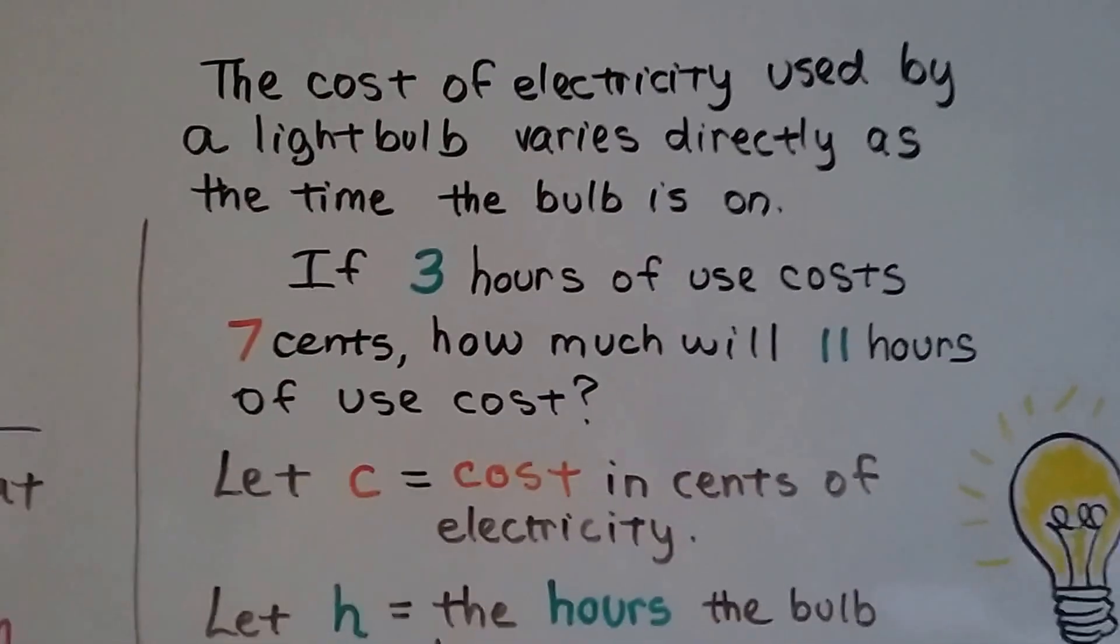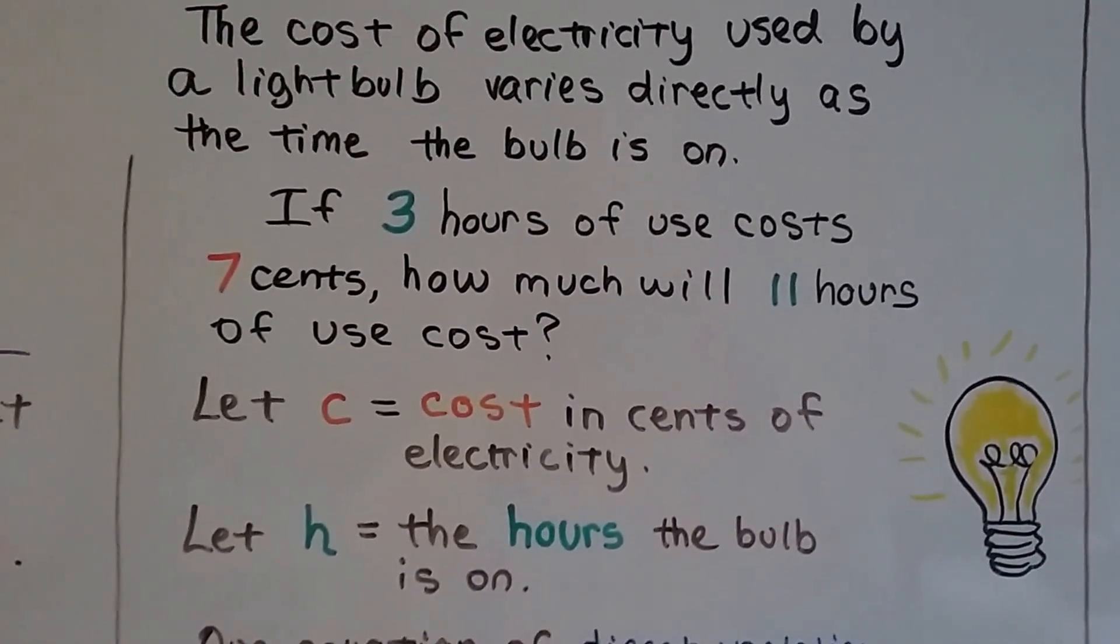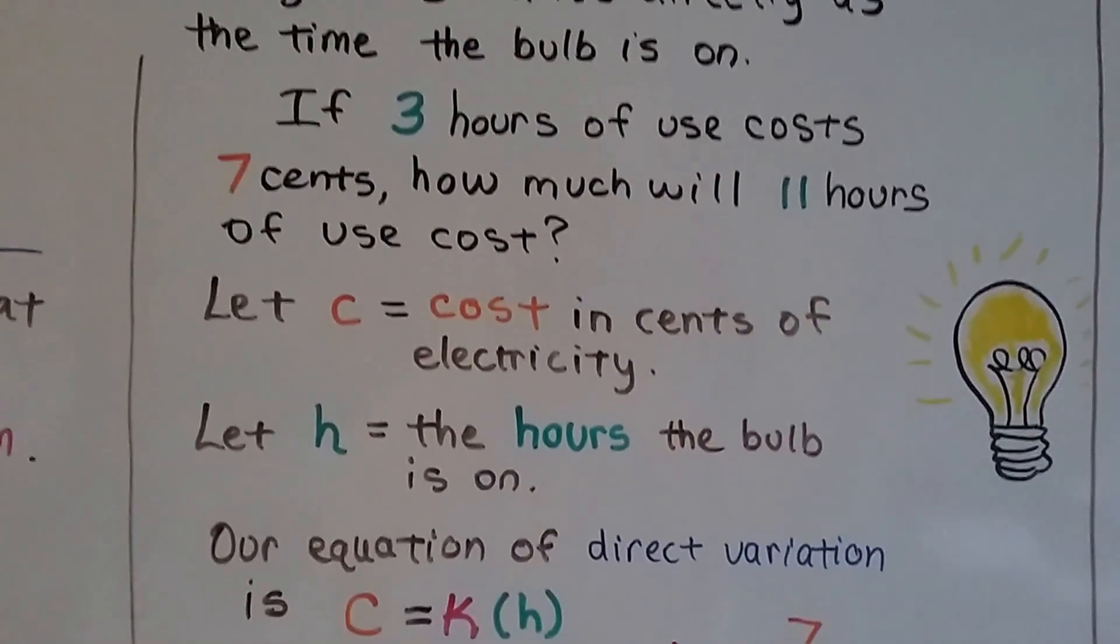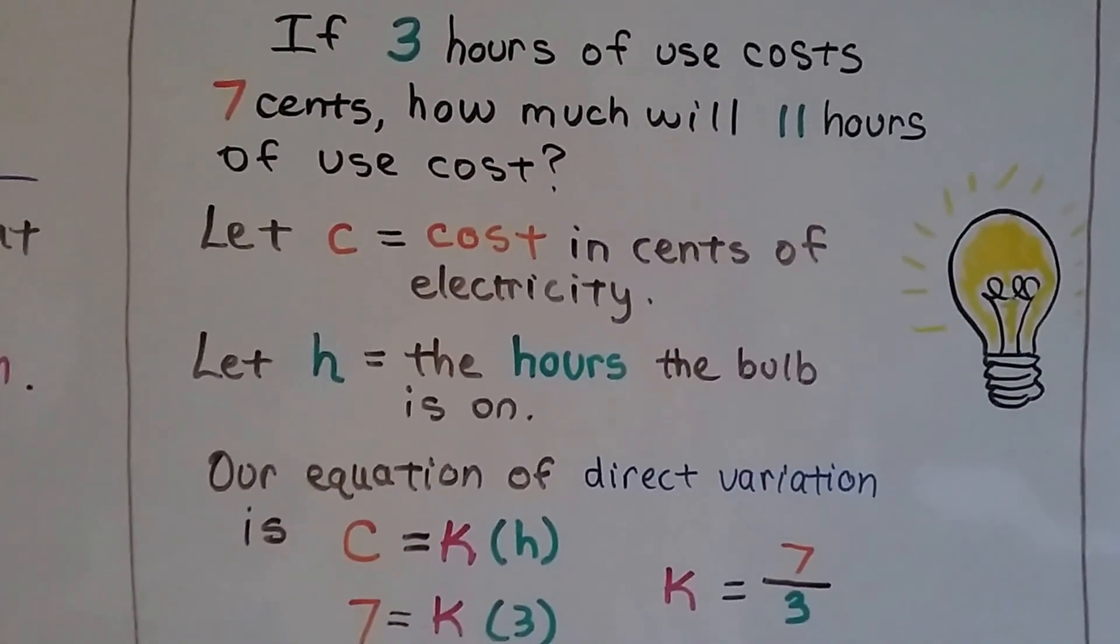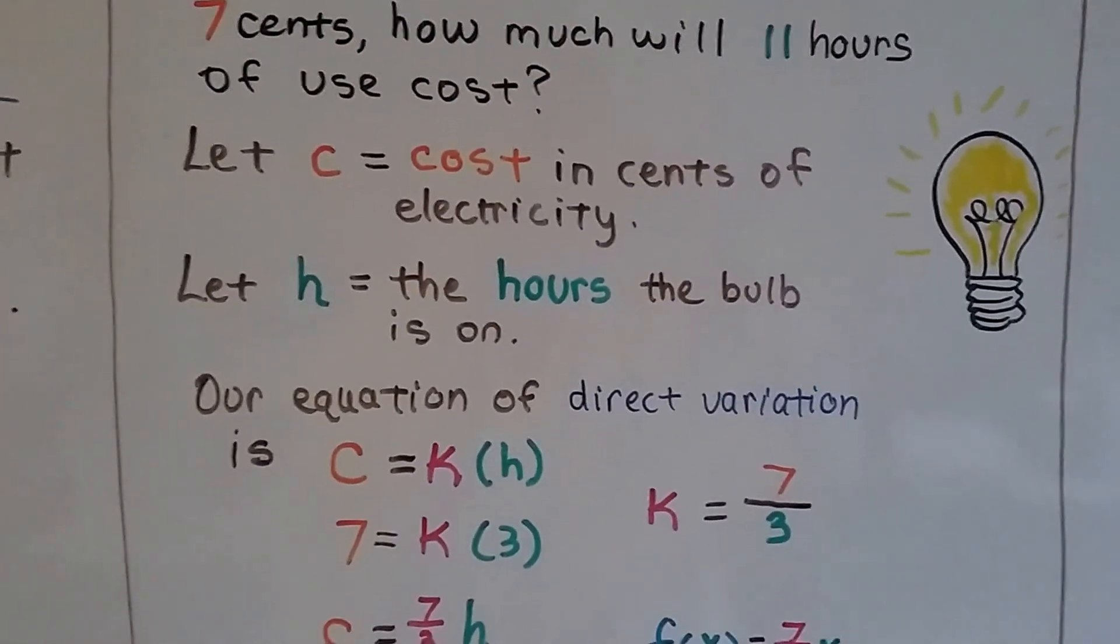The cost of electricity used by a light bulb varies directly as the time the bulb is on. If 3 hours of use costs 7 cents, how much will it cost for 11 hours of use? We're going to let C equal the cost in cents of electricity, and let H be the hours the bulb is on.